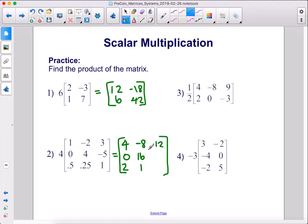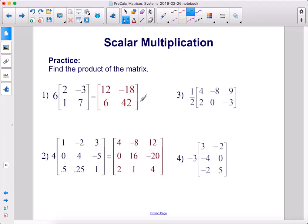3 times 4 is 12, negative 5 times 4 is negative 20, 1 times 4 is 4. There are the answers for the first two. Let's move on.